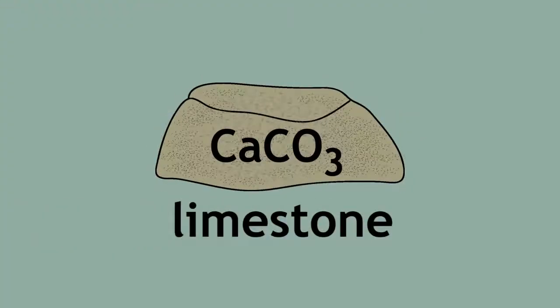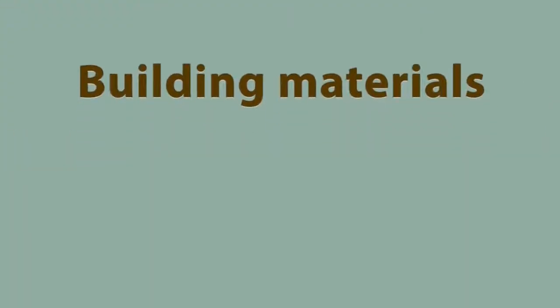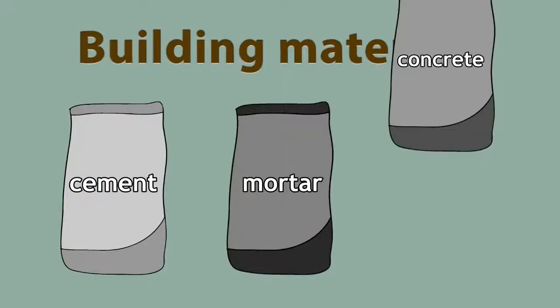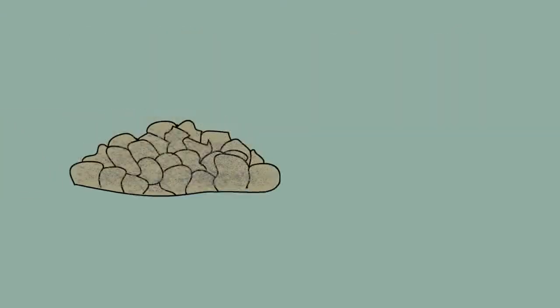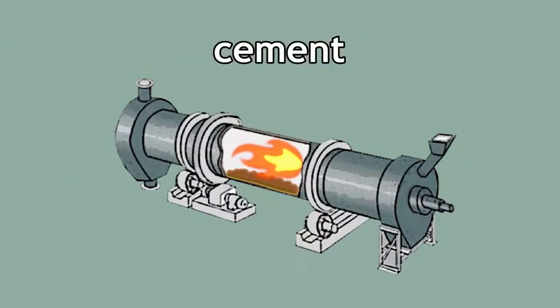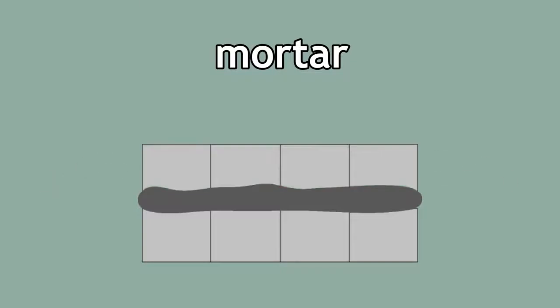Limestone can be used to make other building materials, such as cement, mortar, and concrete. When limestone is crushed and heated with clay in a rotary kiln, cement is made. Cement can be mixed with sand and water to produce mortar, which is used to glue bricks together.